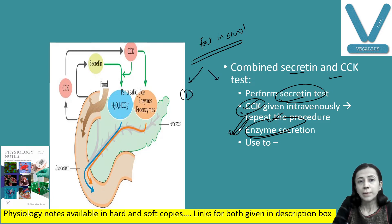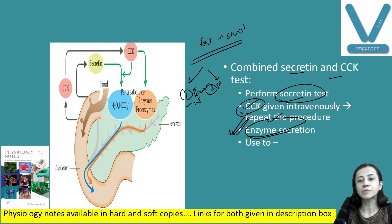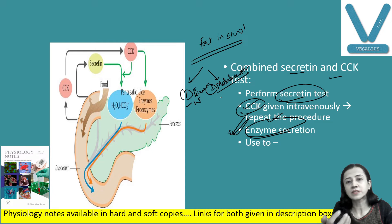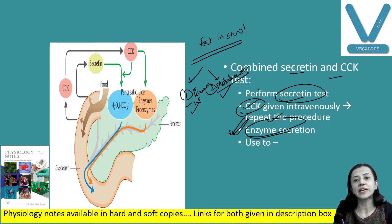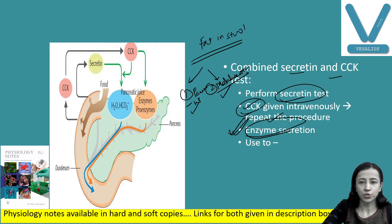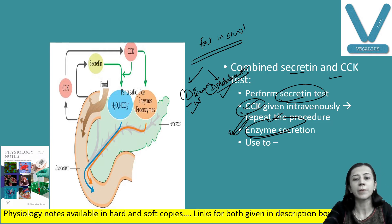There are mainly two causes of steatorrhea. Number one: pancreatic insufficiency, meaning pancreatic enzymes are absent. Number two: malabsorption syndrome — pathology in the intestine. To differentiate whether the cause is pancreatic pathology or intestinal malabsorption, we perform this test by giving cholecystokinin and checking whether enzyme secretion increases or not.